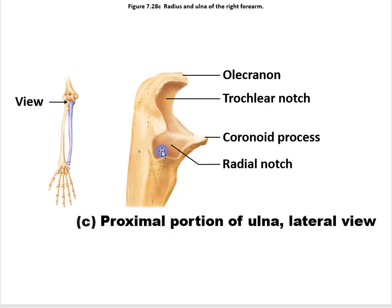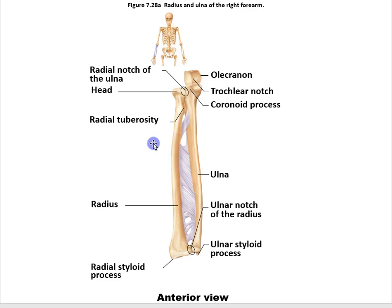You'll also notice the radial notch on the ulna. A notch is just a bite taken out of the bone. The radial notch articulates with the radius — specifically the proximal part, which is called the head. So the head of the radius articulates with the radial notch of the ulna.